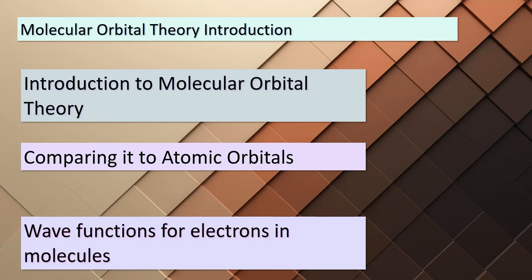Today we're diving into the captivating world of molecular orbital theory. Just like we discussed atomic orbitals in chapter 6, this sophisticated model takes us a step further into the understanding of bonding within molecules. Just as electrons within atoms have their unique wave functions — we call them atomic orbitals — in the realm of molecules, molecular orbital theory describes how electrons within molecules can be visualized using specific wave functions. Each of these wave functions is termed a molecular orbital, or MO for short. This theory provides us with a deeper insight into the nature of chemical bonds.